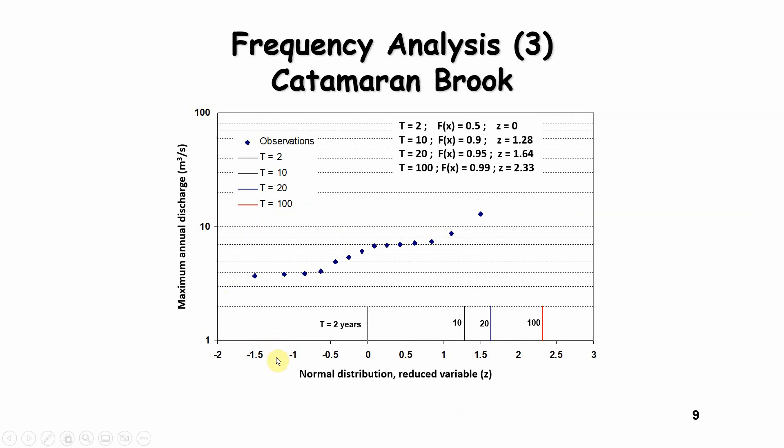Now, if you plot the z values or the reduced variable of your normal distribution against your log values of discharge, and then log your y-axis in Excel, this should give you a straight line. So you only need to plot this, then put a straight line to this, and basically estimate what would be your 100-year event, your 20-year event, the 10-year flood, and the two-year flood, based on the z values that you can calculate.